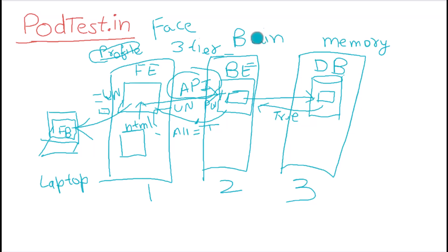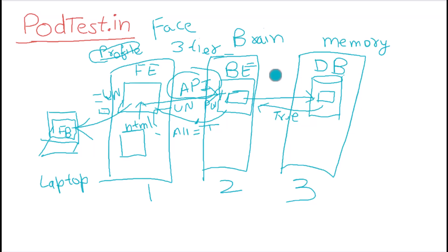That data is sent to the backend. So the next question you should be asking in your project is: what is our backend, what tech stack are we using, where exactly is the backend placed? And after that, you need to understand that the backend processes it, but eventually data needs to be stored somewhere — which is your database. So you need to understand what kind of database you are using.